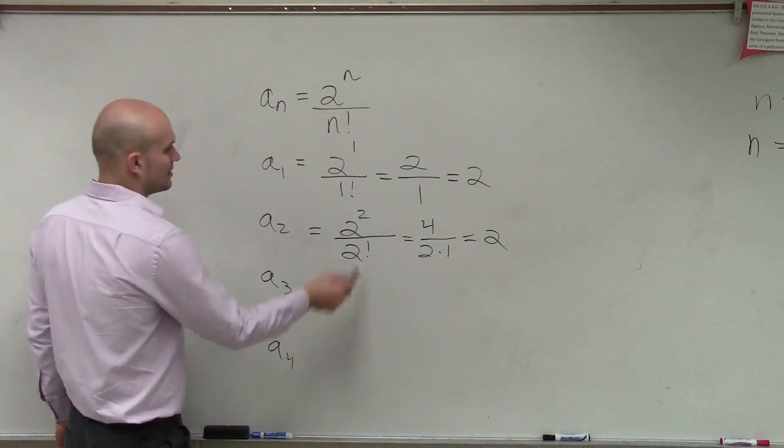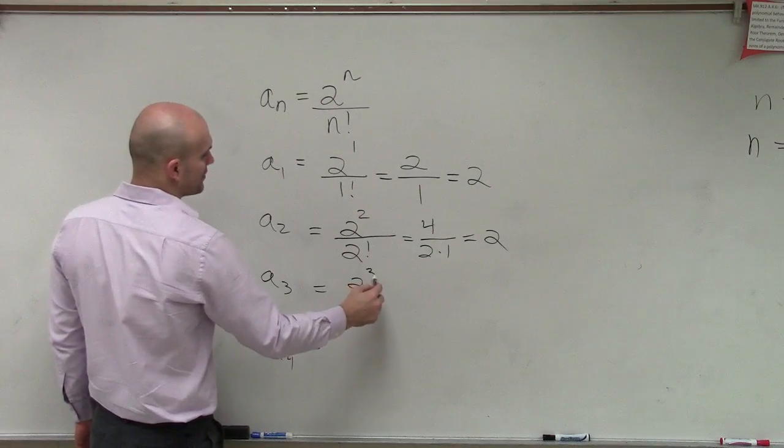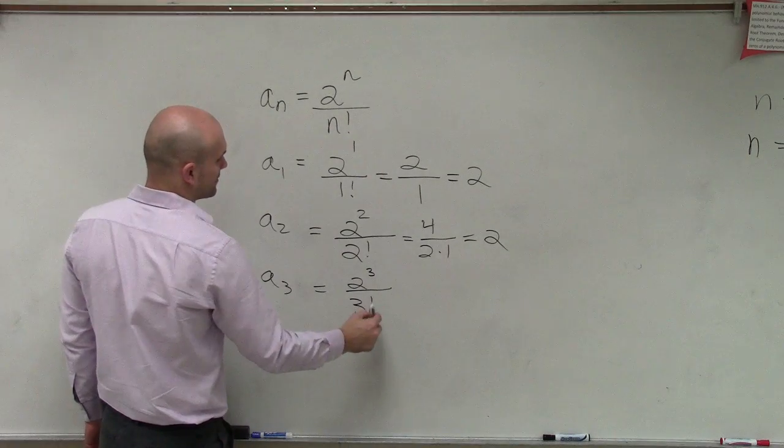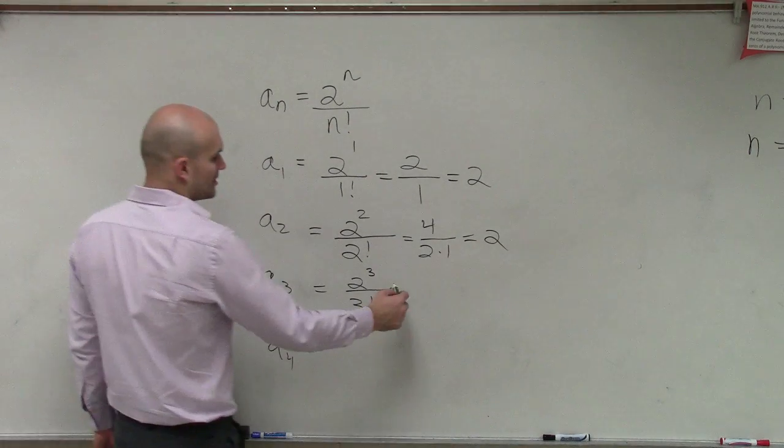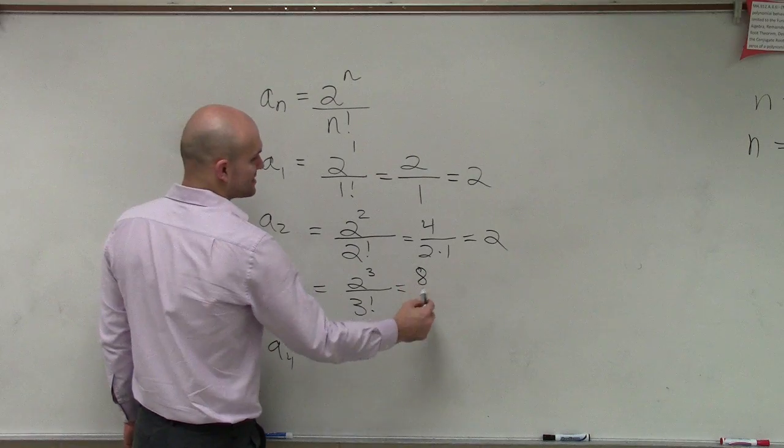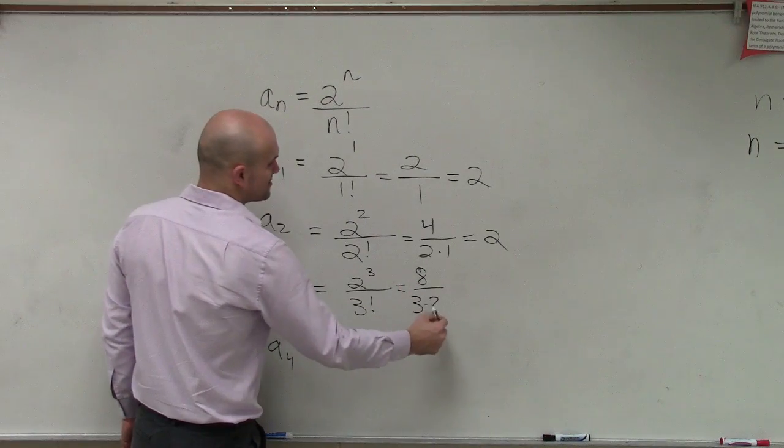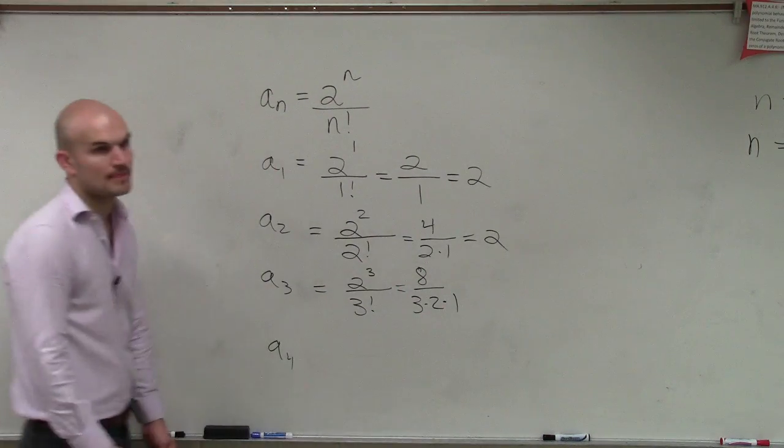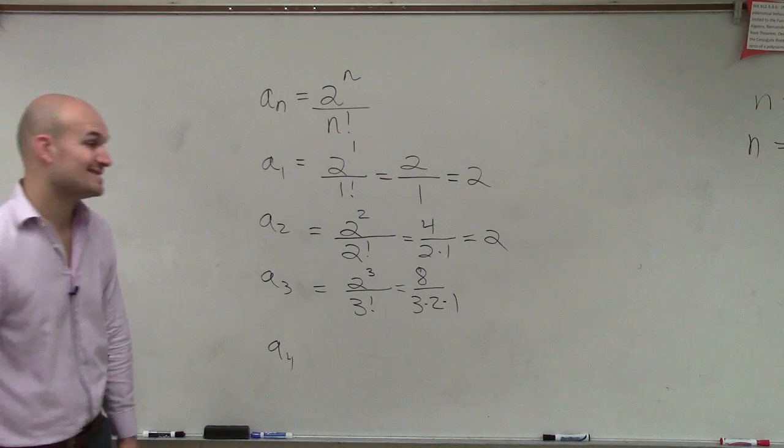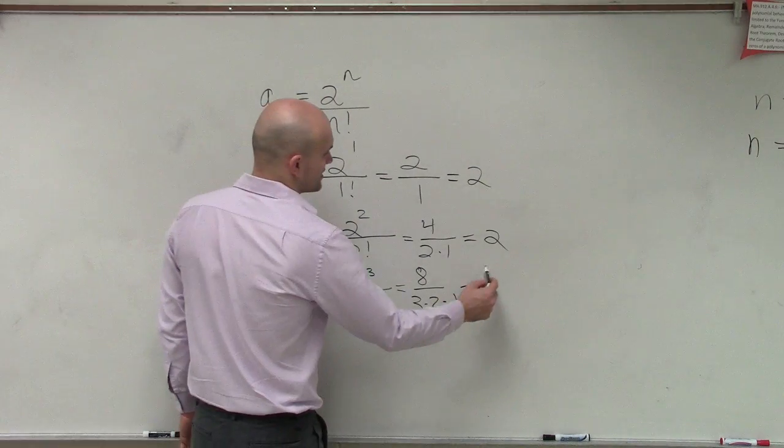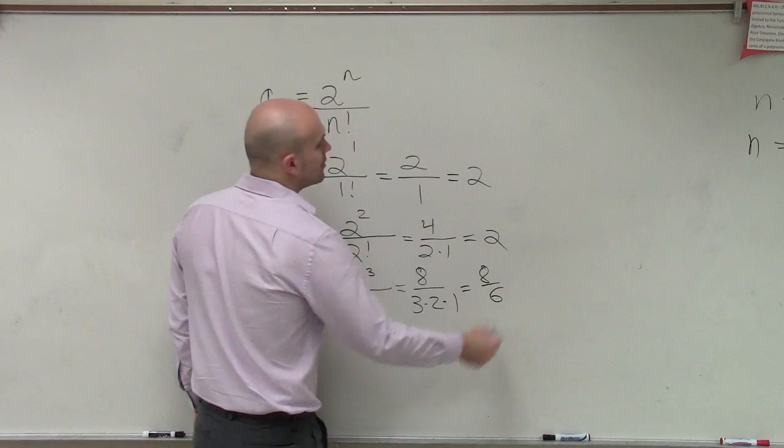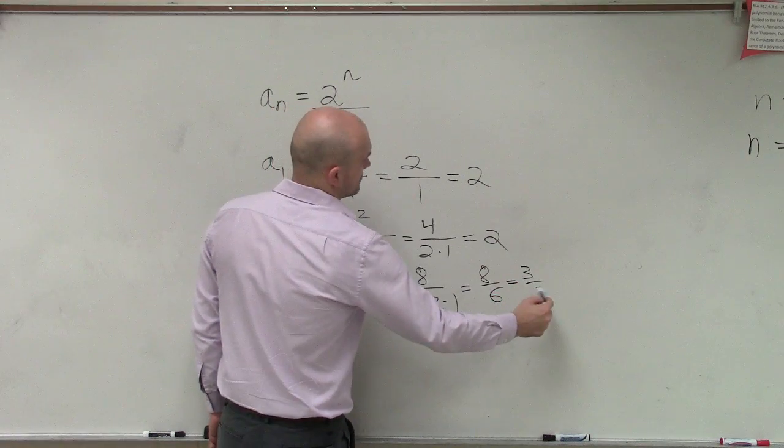Now let's do 3. So we have 2 to the third power divided by 3 factorial. 2 to the third power equals 8 divided by 3 times 2 times 1. So 3 times 2 times 1 is 6. So we have 8 over 6, which is equal to 4 thirds.